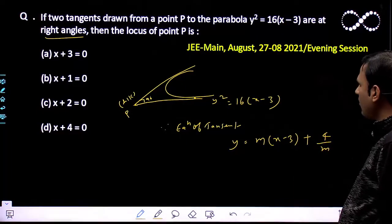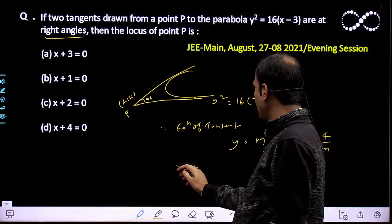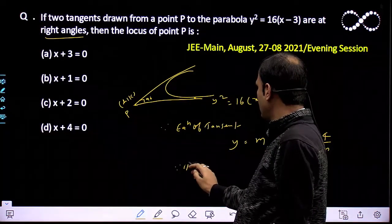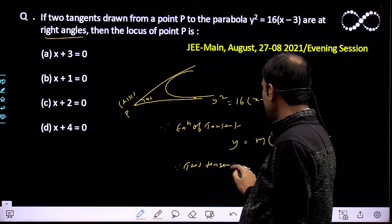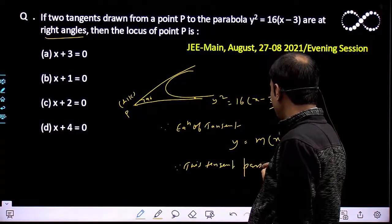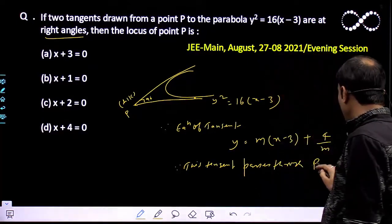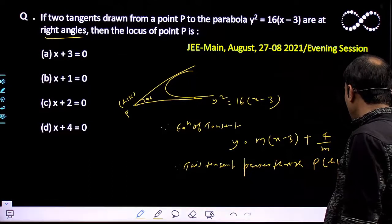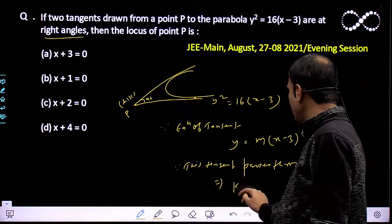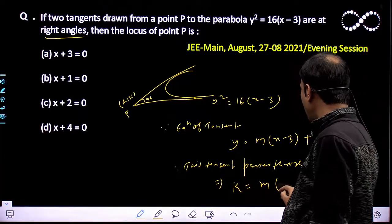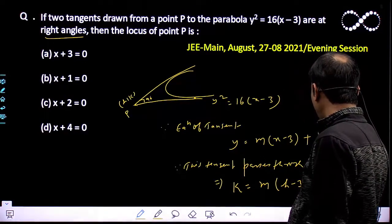This is the equation of tangent. Since this tangent passes through point (h, k), this tangent passes through P(h, k), the equation will be satisfied: k = m(h - 3) + 4/m.